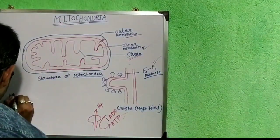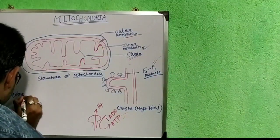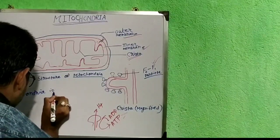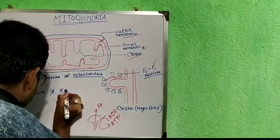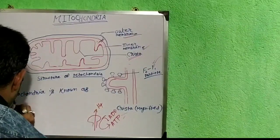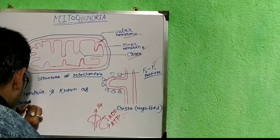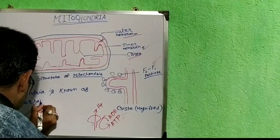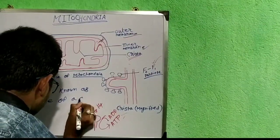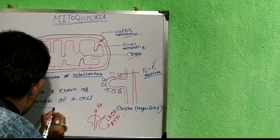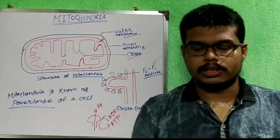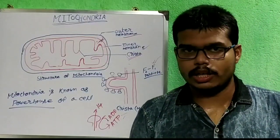Mitochondria is known as the powerhouse of a cell because it produces ATP. That is the basic character and structure of mitochondria.